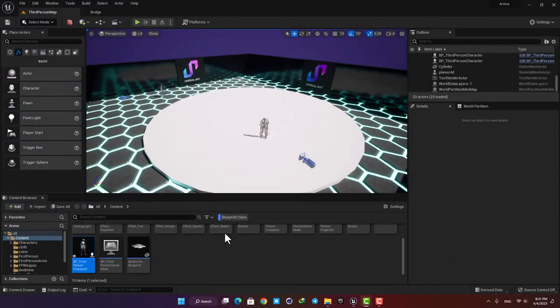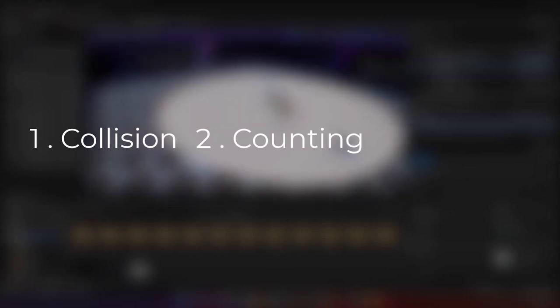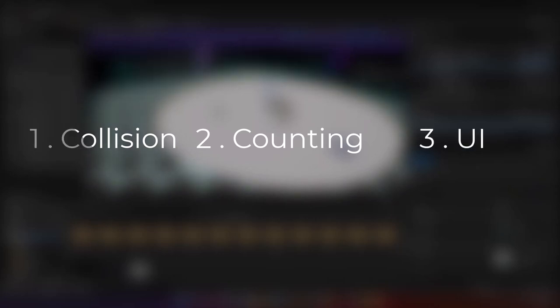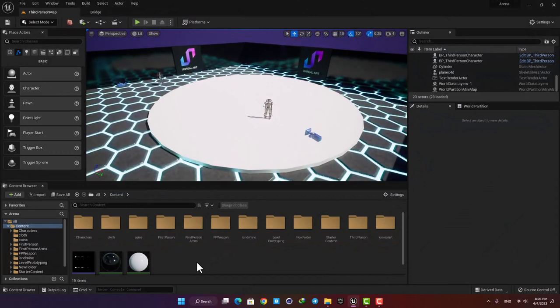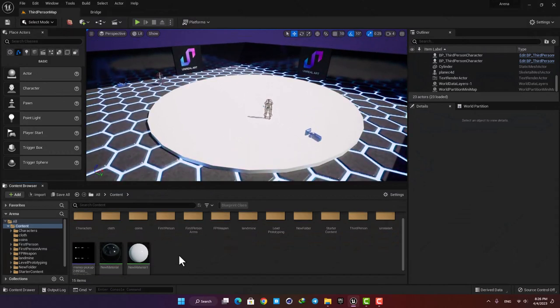The logic you're going to create has three parts. The first one is telling the engine that every time we touch a coin in the level it should disappear, so it looks like we have picked it up. Then we need to count the coins we have collided with, and in the last part we want to show the numbers on our screen. So let's start with the first part and make the collision logic.